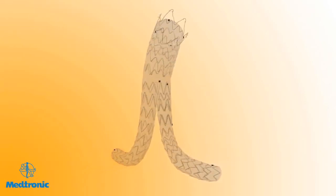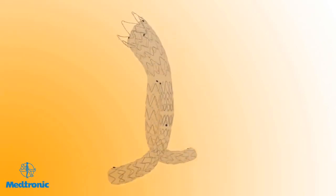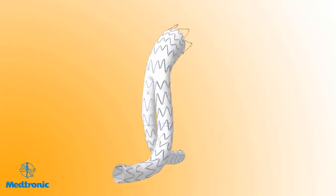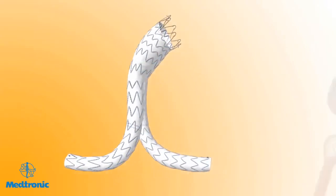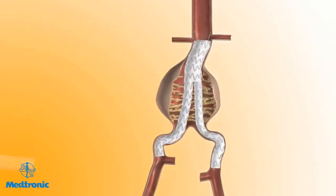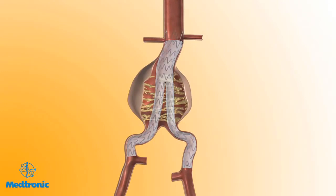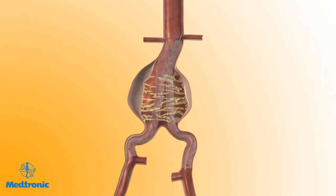The Endurant StentGraft system is designed to treat patients with abdominal aortic aneurysms using the endovascular approach. When placed within the aneurysm, the Endurant StentGraft provides a permanent alternative conduit for blood flow within the patient's vasculature, thereby providing a minimally invasive alternative treatment choice in lieu of open surgery.